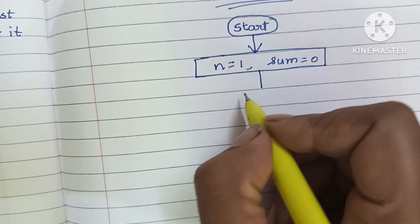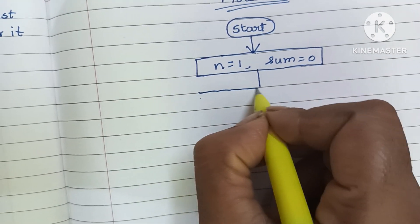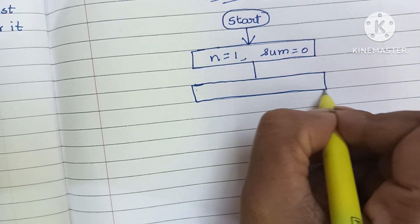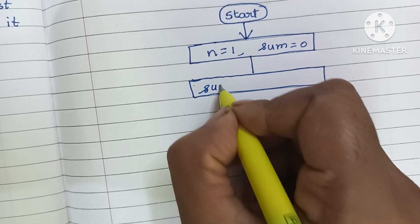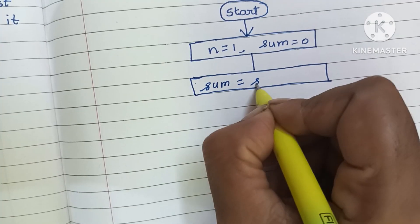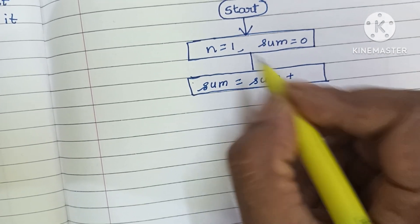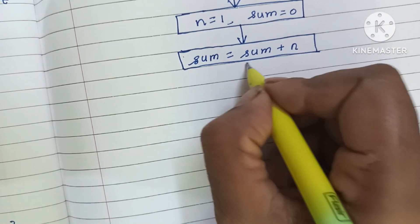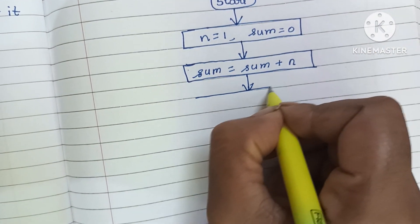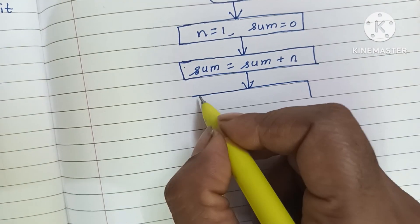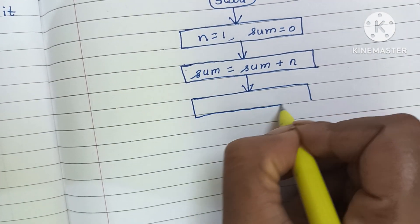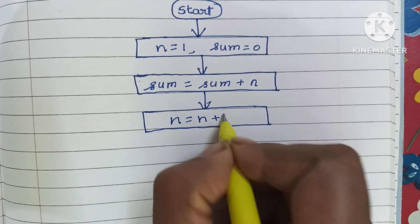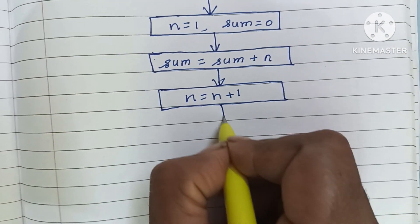Next we calculate the sum value. Calculation is done within a rectangular shape, so we write sum = sum + n. Then we calculate n = n + 1, also written within a rectangular shape.